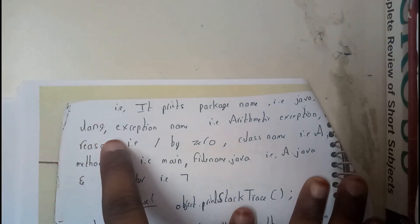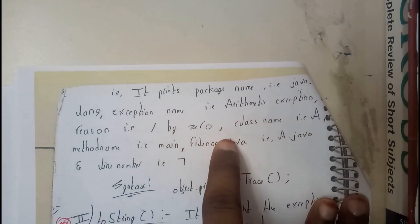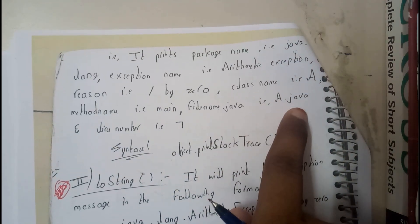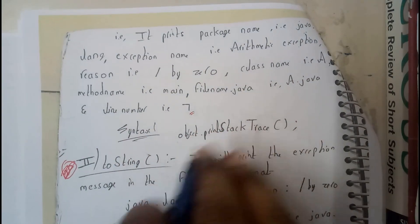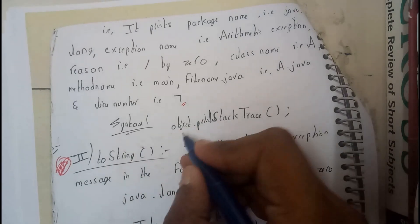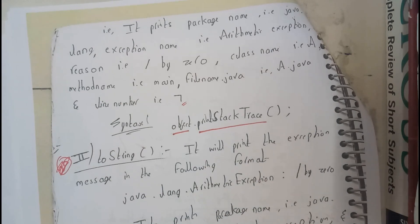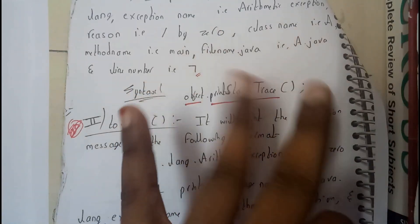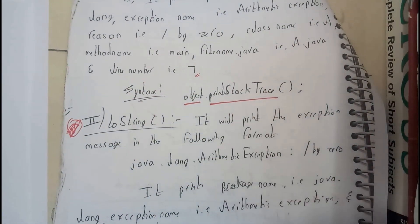So it prints the package name - that is the lang package - exception name: ArithmeticException, reason: divide by zero, class name, method name: main, file name: .java, and line number: seven. These are all the things that printStackTrace will be printing. The syntax to use this method is: object.printStackTrace(). Note that 'p' is small, 'S' is capital, and 'T' is capital, as it is a method.